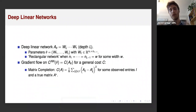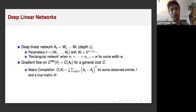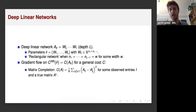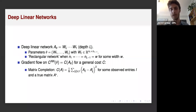In matrix completion, the idea is that you have some matrix A* that you want to reconstruct, but you only observe some entries of the matrix and you want to recover the missing entries. What's interesting is that it's very important to have a sparsity or low-rank assumption, because without it the best guess you could make is just to put zeros in all of the unobserved entries. This minimal Frobenius-norm solution is essentially the equivalent of the kernel method solution from previous talks and is not able to generalize at all in this setting.